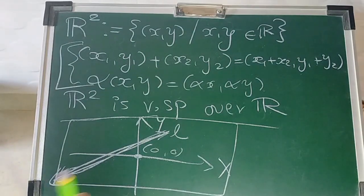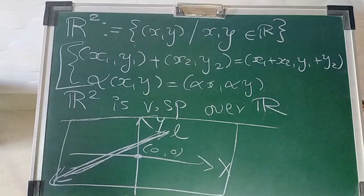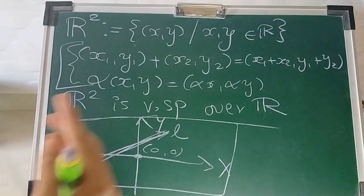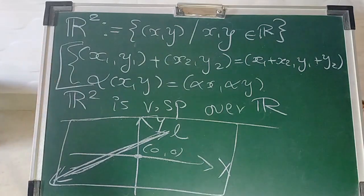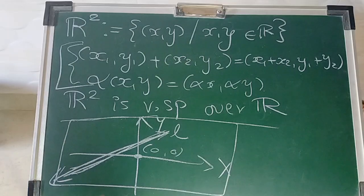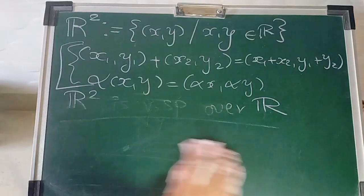This means a line not passing through the origin cannot be a subspace of R², since it cannot form a vector space on its own. A subspace of a space is nothing but a smaller vector space, and since it is not becoming a vector space, it cannot be a subspace of R². If you want to see this algebraically, let us try.